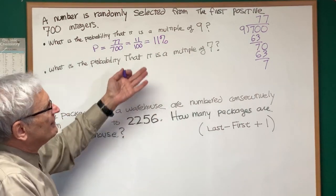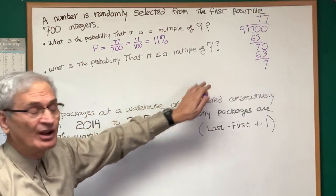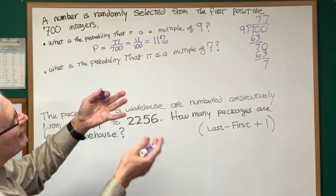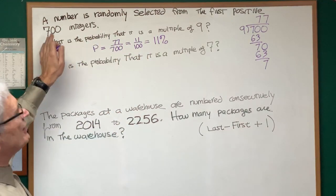All right, so very similar. Why not ask another question? What is the probability that it is a multiple of 7? Well, do we really need to have an explicit calculation? How many multiples of 7 are there between 1 and 700?